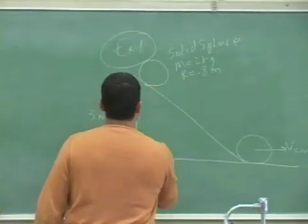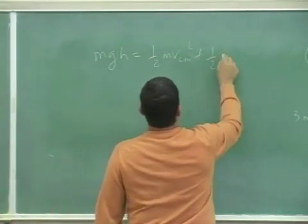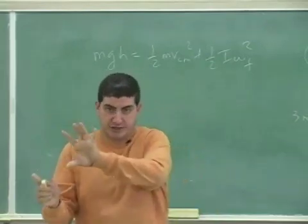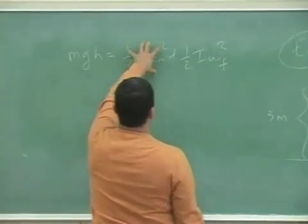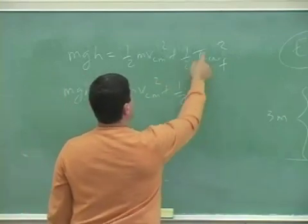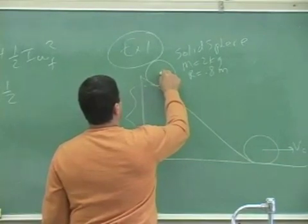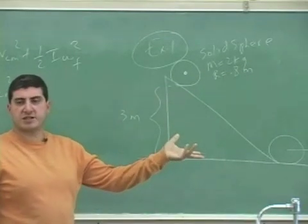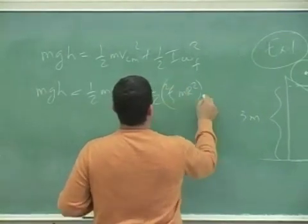The kinetic energy way says the potential energy equals the final kinetic energy. This is the kind of example where the object has two kinds of kinetic energy: translational and rotational. So the total initial potential energy equals the sum of the kinetic energies. The moment of inertia of a solid sphere rotating about an axis through its center — Izz or Ixx — is two-fifths MR squared, times omega final squared.